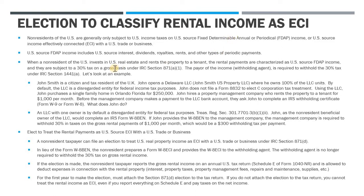U.S. source FDAP income includes U.S. source interest, dividends, royalties, rents, other types of periodical payments — annuities, insurance payouts. A lot of these things fall under the U.S. FDAP umbrella. Rents are included, and that's the focus of this video. So when a non-resident invests in U.S. real estate and decides to rent the property out to a tenant, the rental income is going to be U.S. source FDAP income.